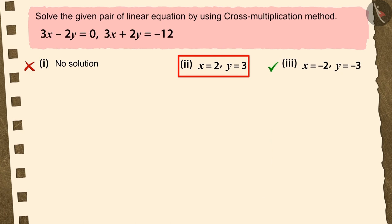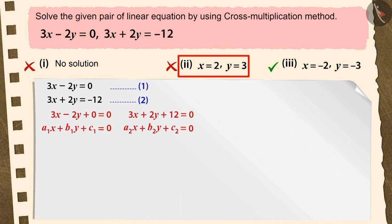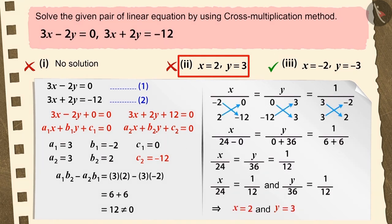If you have chosen option 2, it's also a good try, but this is also an incorrect answer because you didn't write the given equations in their general form. As a result, you considered the value of c2 as minus 12 and solved the question further, which became the reason for your answer being incorrect.